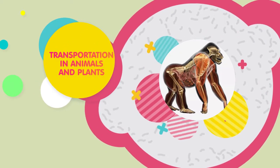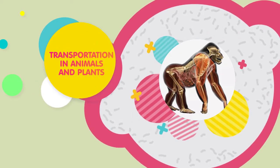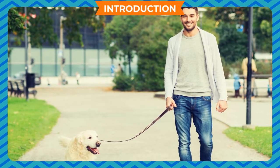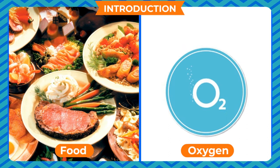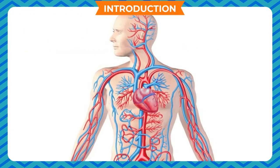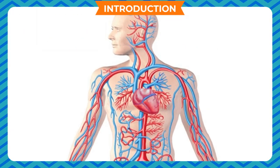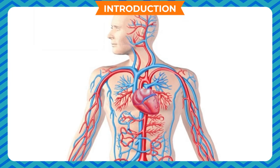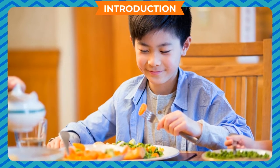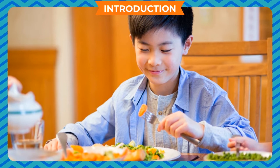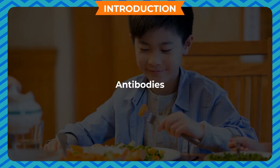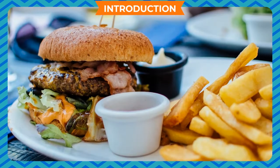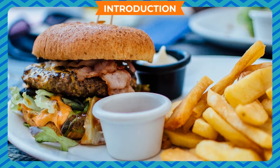Transportation in Animals and Plants. Every cell in a living organism needs food and oxygen in order to be healthy. There is thus a very effective transport system within our body. This transport system is responsible for the transportation of substances like food, oxygen, medicines, antibodies, and waste products to various sites. Food has to be transported to the site of oxidation.